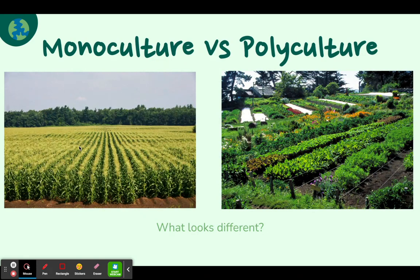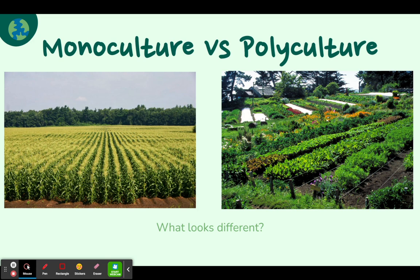Monoculture is when you grow only one crop over a large area. Polyculture means you grow many crops in an area, and sustainable agriculture uses crop rotation, moving where they put crops each year. With monoculture, if a specific bug that likes corn finds your field, it will have the best season of its life — eating your corn, reproducing, and wiping out your whole crop. That makes monoculture very sensitive and easily destroyed by pests.